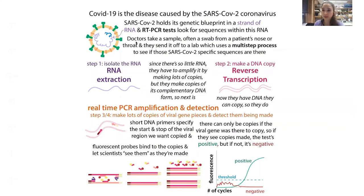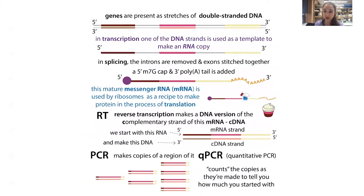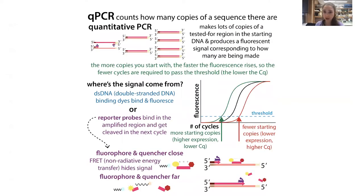This is why RT-qPCR can be used for COVID-19 detection — primers tell the DNA copiers to make copies of viral genetic sequences. For studying gene expression, we tell it to make copies of whatever messenger RNA we're interested in. If primers are designed correctly, all copies being made should be of the thing you're actually looking for. One detection method uses double-stranded DNA binding dyes (like SYBR Green), which lets you measure dsDNA formation. However, this is less specific than reporter probes.